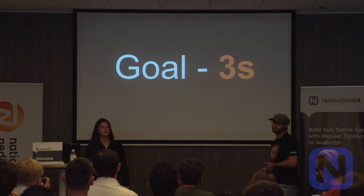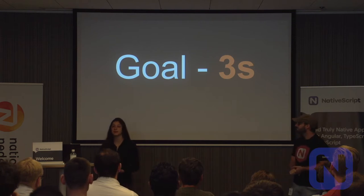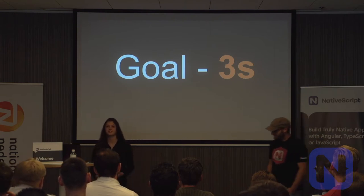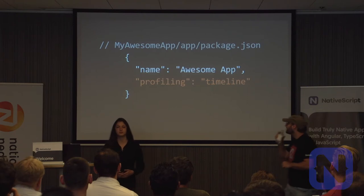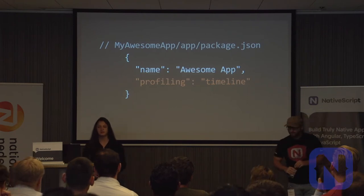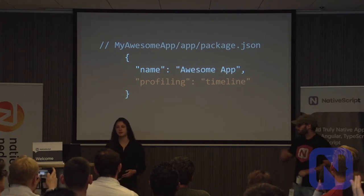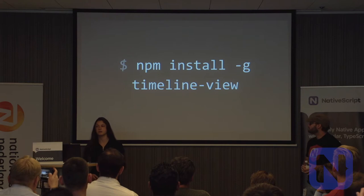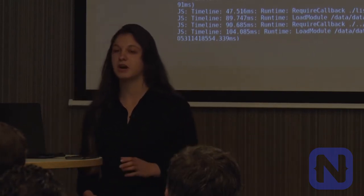Our goal here is to reach three seconds. We have 13 seconds of startup time but almost no clue what's happening in those 13 seconds, so we need to do some profiling. For that, we're going to use the Timeline View — a tool we released in the latest version of NativeScript. The first thing we need to do is add the profiling key with value 'timeline' in our app package.json, then install the Timeline View from npm globally, since we can use it for all our NativeScript applications.